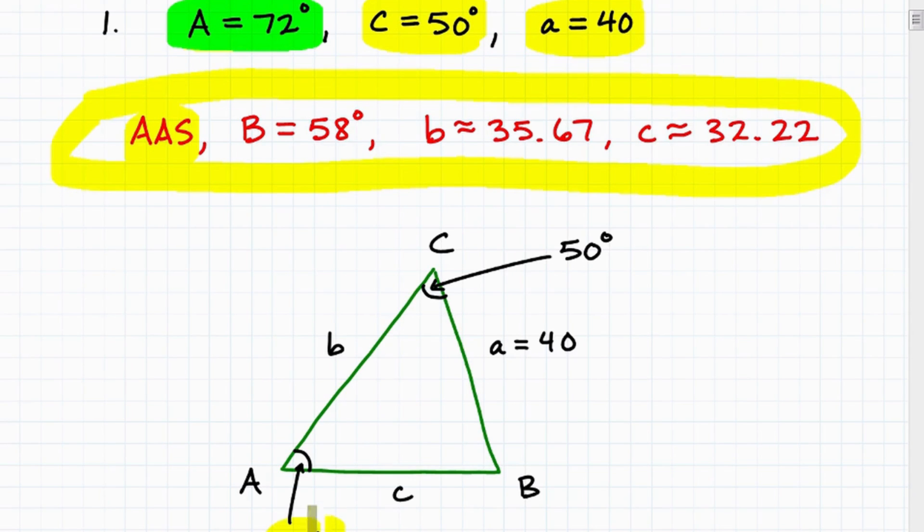Okay. So let's go ahead and start off. So I have an angle at 72 degrees. That's angle A. And then I have another angle, 50 degrees. And I'm giving the information the length for A. So let's call this here A. So A is going to be 40. So that's what I'm giving right now.